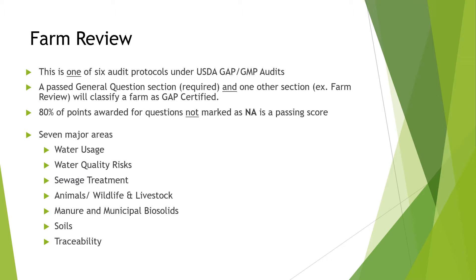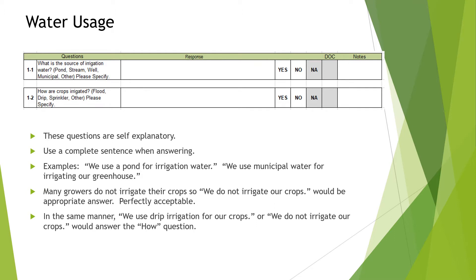There are seven major areas: water usage, water quality risk, sewage treatment, animals, wildlife and livestock, manure and municipal biosolids, soil, and traceability. For water usage, these questions are self-explanatory. Use complete sentences when answering. For example: 'We use a pond for irrigation water,' or 'We use municipal water for irrigating our greenhouse.' Many growers do not irrigate their crops, and a sentence saying 'We do not irrigate our crops' is perfectly acceptable. We use drip irrigation for our crops, or we do not irrigate — this helps answer the 'how.'